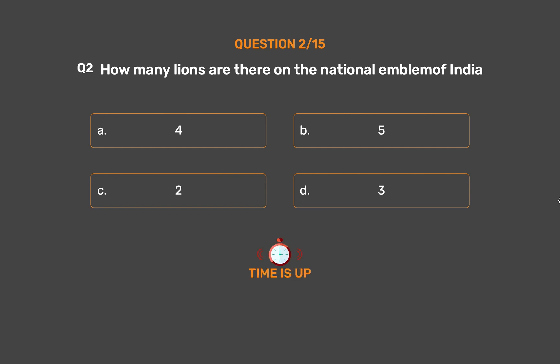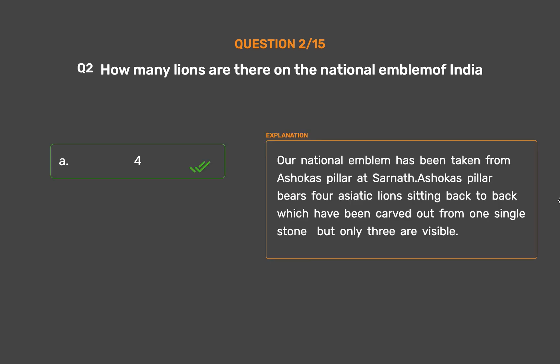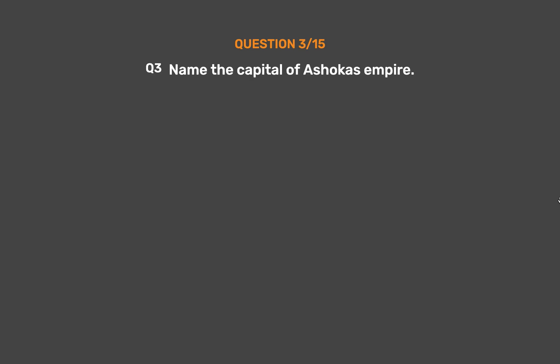The correct answer is Option A: 4. Our national emblem has been taken from Ashoka's pillar at Sarnath. Ashoka's pillar bears four Asiatic lions sitting back to back, which have been carved out from one single stone, but only three are visible.